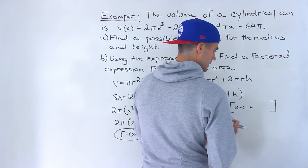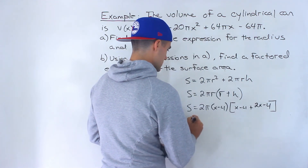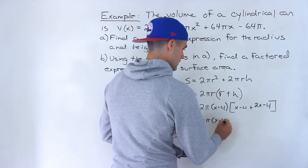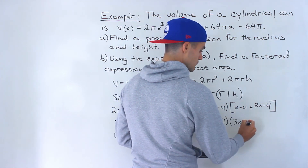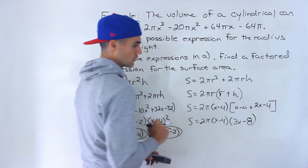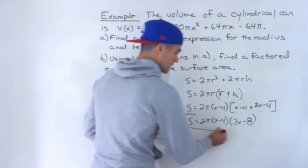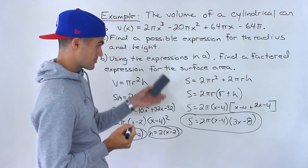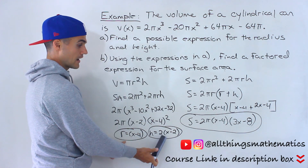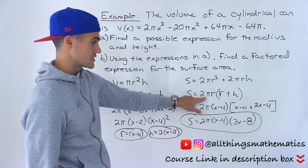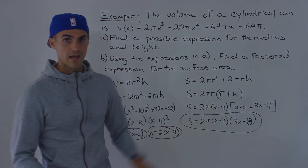Expanding 2(x - 2) gives 2x - 4, so inside the bracket we have (x - 4) + (2x - 4). Combining: 2x + x = 3x and -4 - 4 = -8, giving 3x - 8. We can't factor that bracket further, so the factored expression for the surface area is SA = 2π(x - 4)(3x - 8). Those are the answers for both parts.